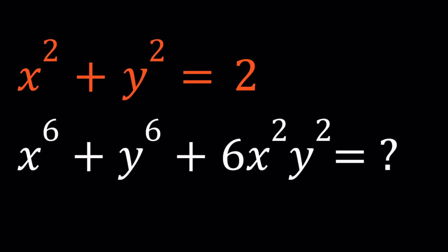We're given that x squared plus y squared equals 2, and we're going to evaluate x to the 6th power plus y to the 6th power plus 6x squared y squared. Based on the first expression, we're going to evaluate the second expression. In other words, we're going to find a numerical value.